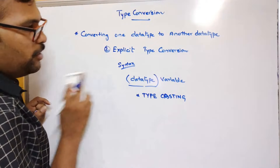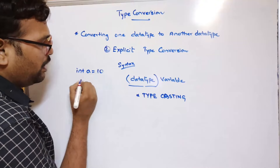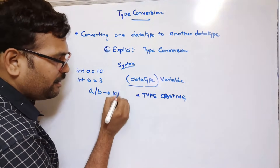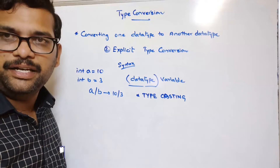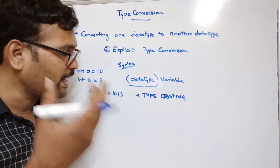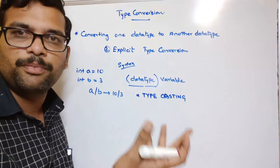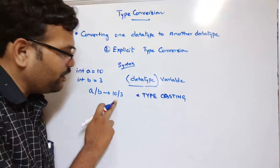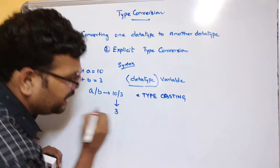One more example: consider the division of two integers. If int a = 10 and int b = 3, and you perform a divided by b, that is 10 divided by 3. Both are integer values, so the result will be an integer. If the expression has multiple data types, automatically the highest data type involved determines the result type. Here both are integers, so the result will be 3 in our C program.